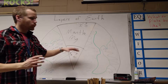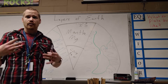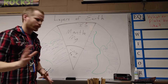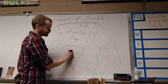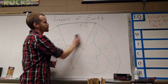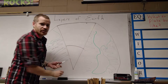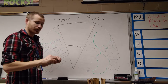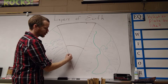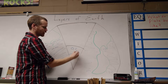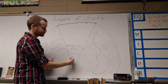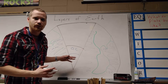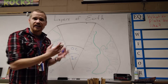Now those have to do with the chemical makeup. Let's take a look at the layers from more of a physical approach. When we look at the physical layers, the core is actually split into two separate things: we have our outer core and we have our inner core. The biggest thing here is that the outer core is liquid, versus the inner core which is solid.